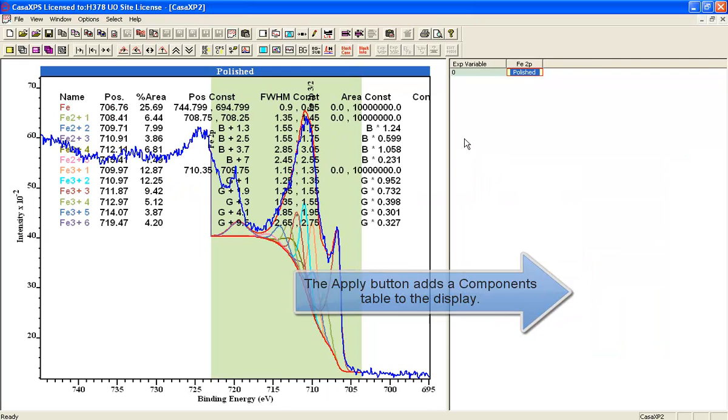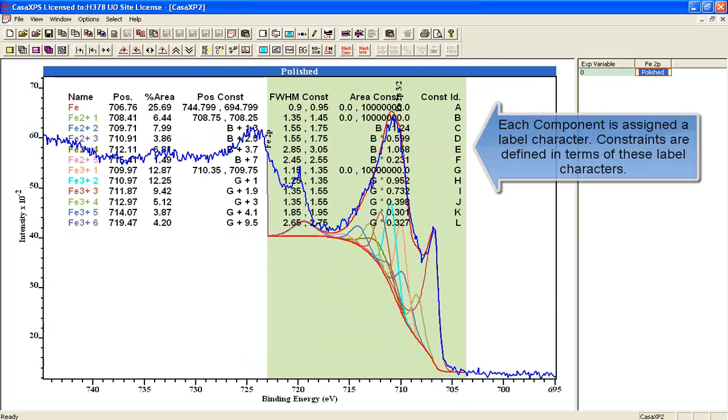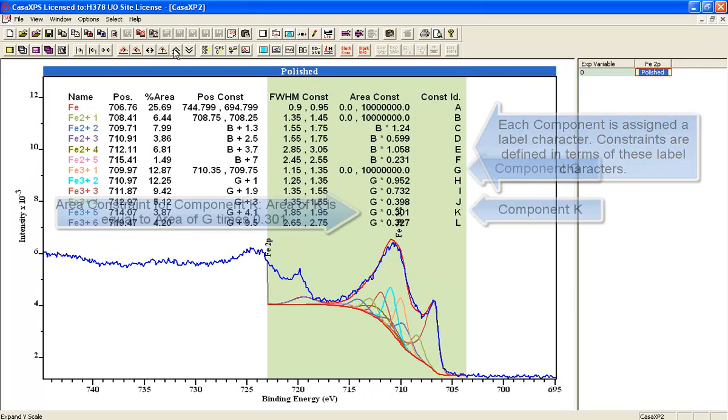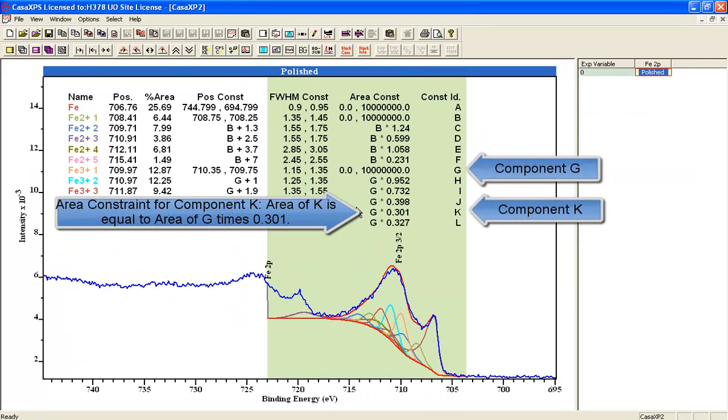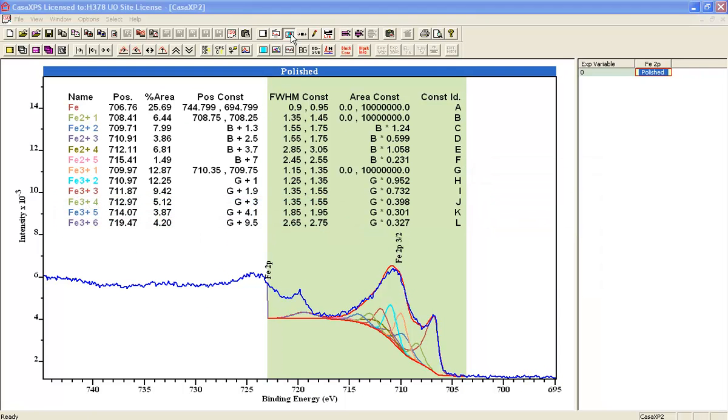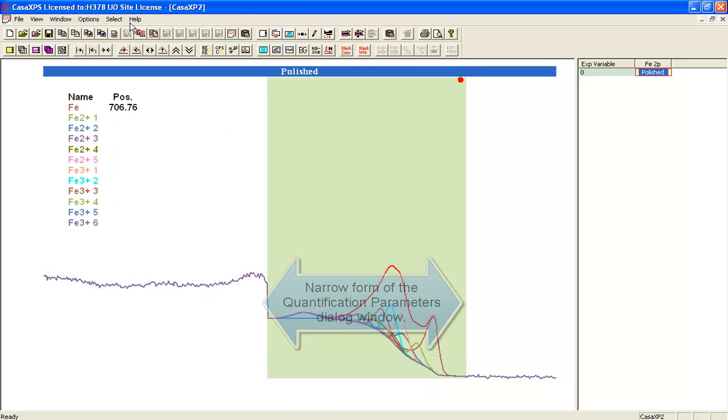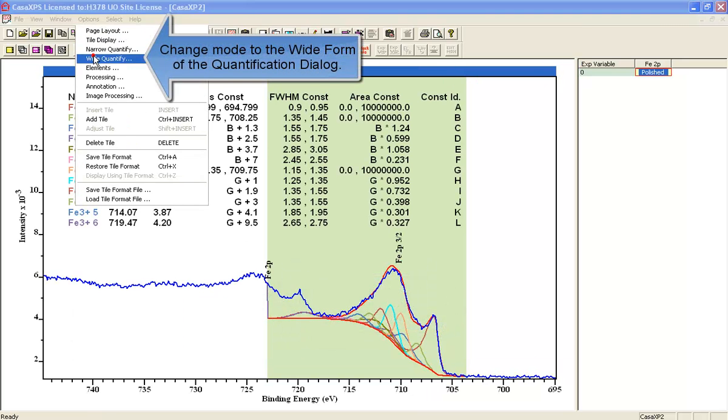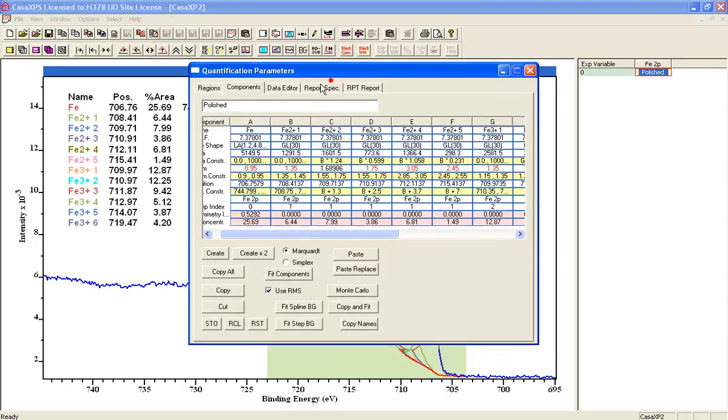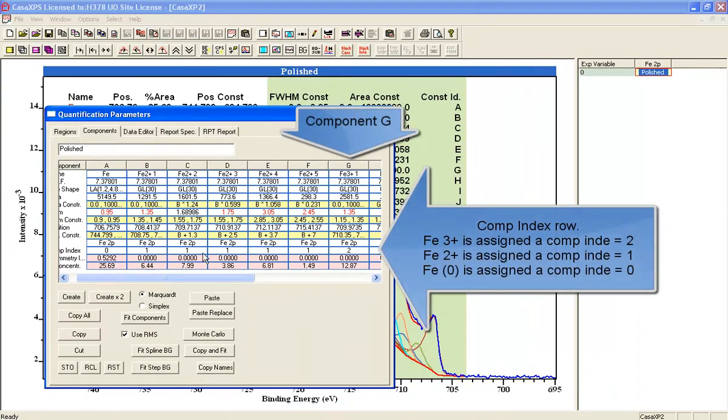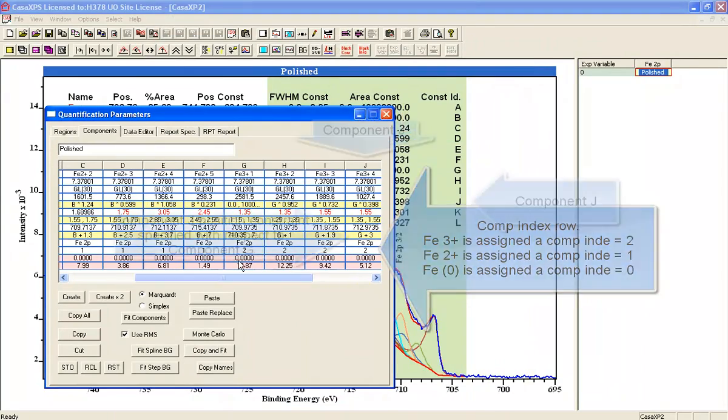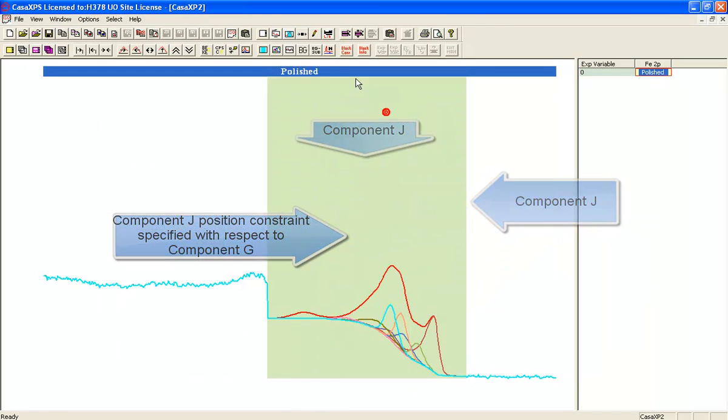By doing so we will see that rather than having many independent peaks, what we've actually got are essentially three different line shapes: one for the metal, one for the iron two plus, and one for the iron three plus. The peaks that are going to be fitted in essence are the iron, then the peak that's in column B on the components property page, and the peak that's in column G. Then all others are fitted using constraints related to those two peaks.